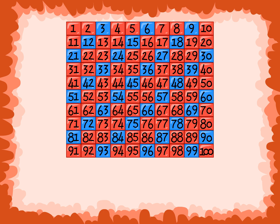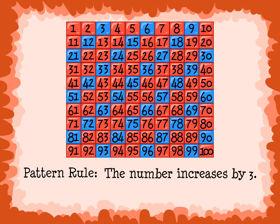We can see a pattern when we count by threes. Every third number is highlighted and there is a pattern of diagonal rows. The pattern rule is the number increases by three.